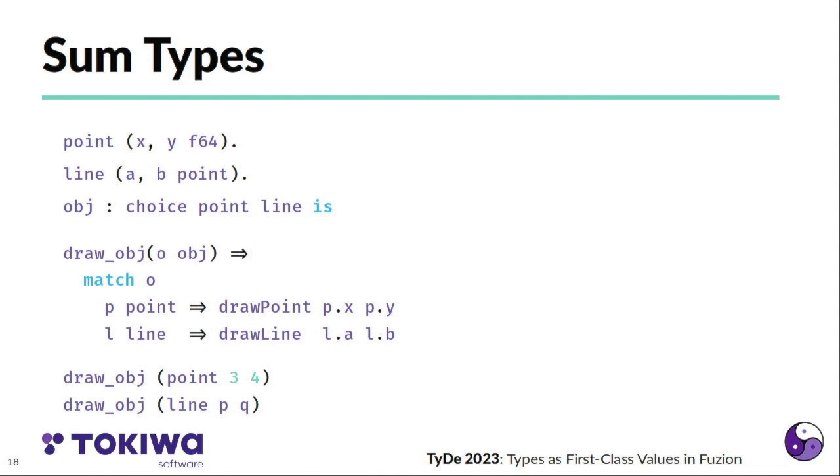We can call this draw object with an instance of a point or an instance of a line, and what actually happens on the call is the instance gets wrapped into a tagged union type, so the point in this example gets equipped with a tag, a type identifier, such that the match in the draw can decide that this is actually a point that wants to be drawn, and correspondingly in the case of a line.